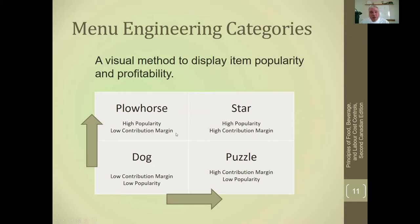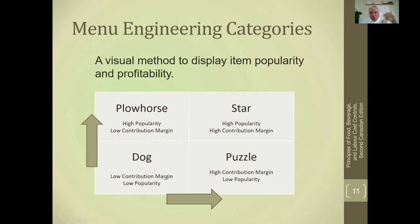There are four choices. The best one: we sell a lot of it, it's very popular, customers like it, they buy a lot, and we also make a lot of money on it. If we sell a lot and we make a lot of money, that's a star - we like that one, we're going to keep that one going. The opposite of that: it doesn't make us any money and we don't sell any - so it's a dog. It's on the menu, we don't sell very much of it, and even when we sell it, we don't make any money. That's low-low - two negatives. This is H-H: high-high, that's good.